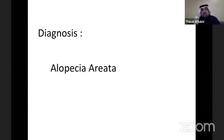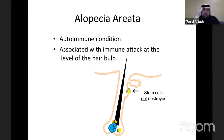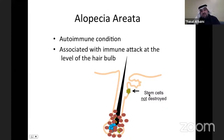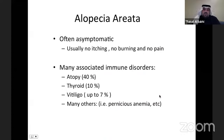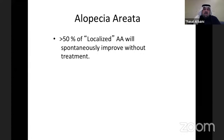This is alopecia areata, one of the most common presentations of hair loss in dermatology. It's an autoimmune condition with an immune attack at the level of the hair bulb — not scarring, because stem cells are not destroyed. Hair becomes weak and falls, but once the immunological attack resolves, new stem cells can regenerate a new hair follicle. It's usually asymptomatic and can be associated with other immune disorders such as atopic dermatitis, thyroid disorders, or vitiligo, which indicate a more difficult-to-treat case.